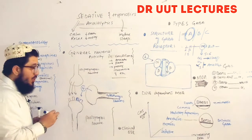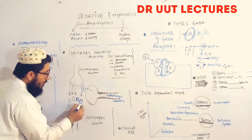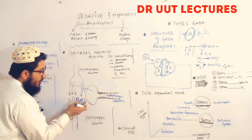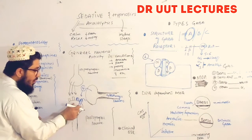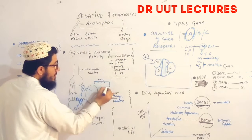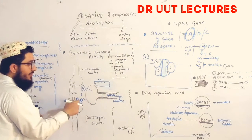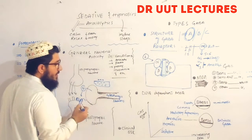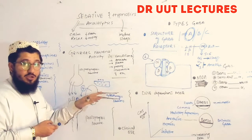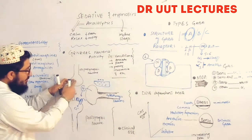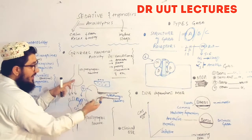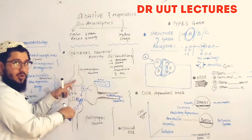When GABA binds to the GABA receptor, the receptor opens a channel that allows influx of negative chloride ions into the postsynaptic neuron. Normally, the outside is positive and the inside is negative. When the channel opens and more negative ions enter, the inside becomes more negative — a condition known as hyperpolarization — which inhibits excitation. This GABAergic activity maintains a normal neural level.